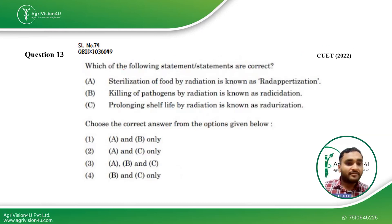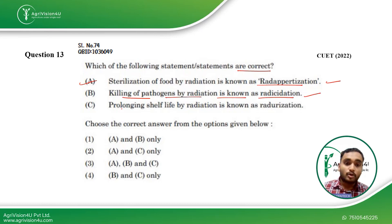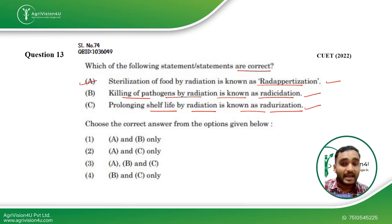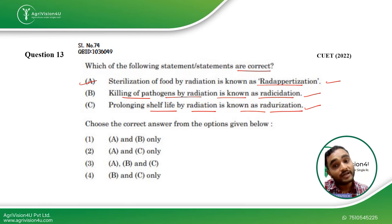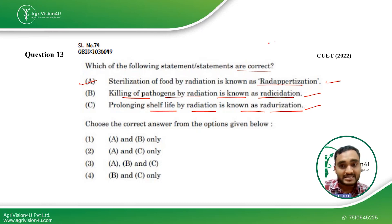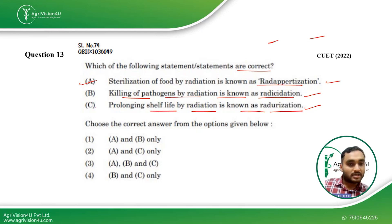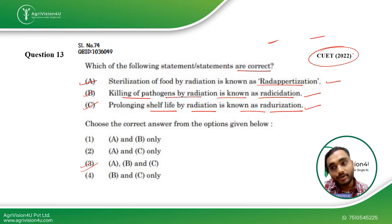Coming to Question 13: which statements are correct? Sterilization of food by radiation is known as radappertization — correct. Killing of pathogens by radiation is known as radicidation — correct. Prolonging shelf life by radiation is known as radurization — correct. Irradiation is a very important topic; you need to be clear about dosage levels: below 1 kGy, 1–2 kGy, 2–5 kGy, 10 kGy, and beyond 10 kGy. Irradiation works by two mechanisms: DNA denaturation and formation of free radicals. All of A, B, and C are correct, making the third option the right answer. This question was asked in CUET 2022.